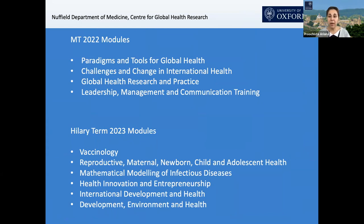A little bit more about the course and its structure. We have three terms over the one-year program. In the first term, we tackle subjects such as paradigms and tools for global health — the different kinds of methodologies that future global health leaders will need to understand challenges and devise creative solutions. Topics include epidemiology, statistics, qualitative and mixed methods, introductions to health economics, as well as finance and management.